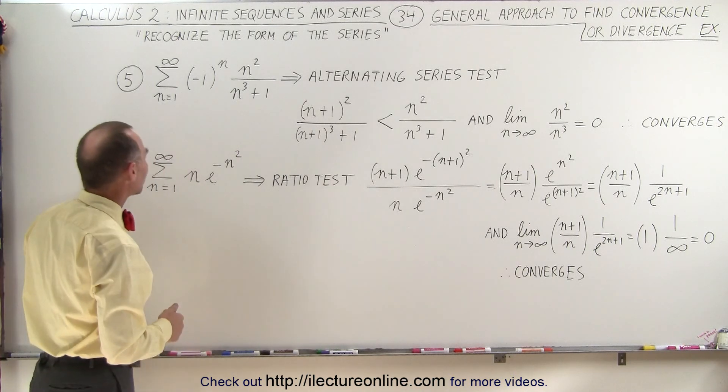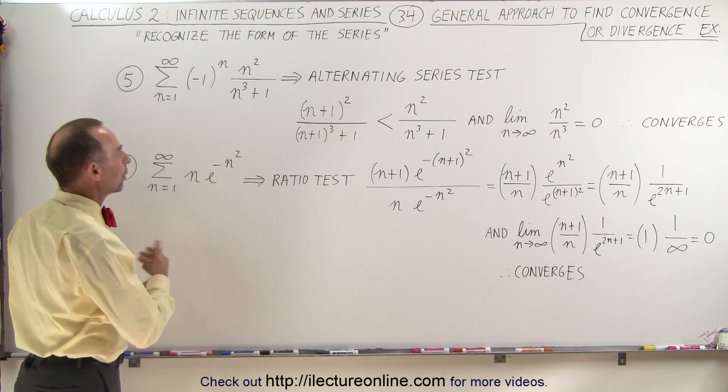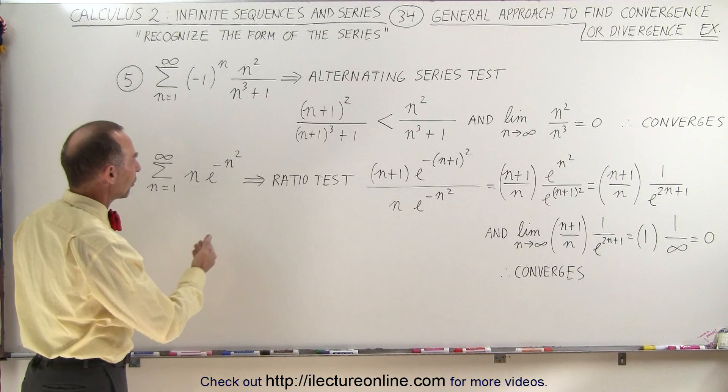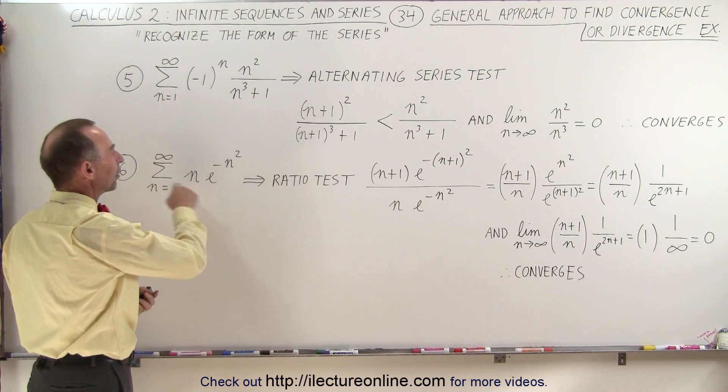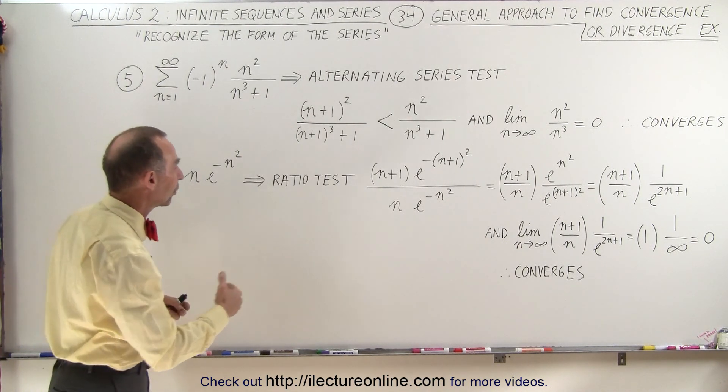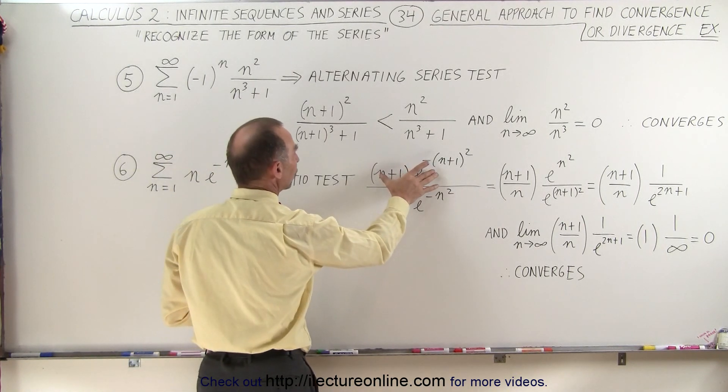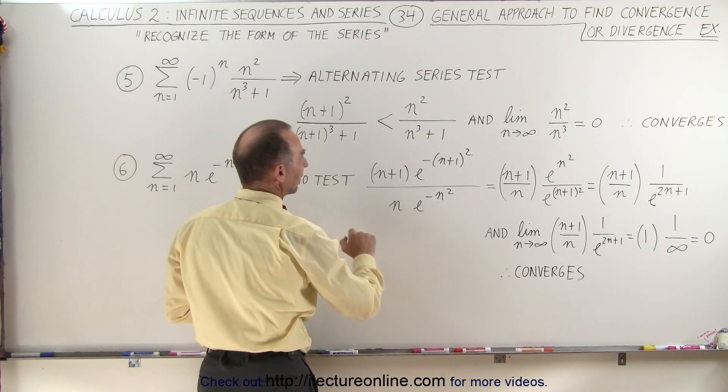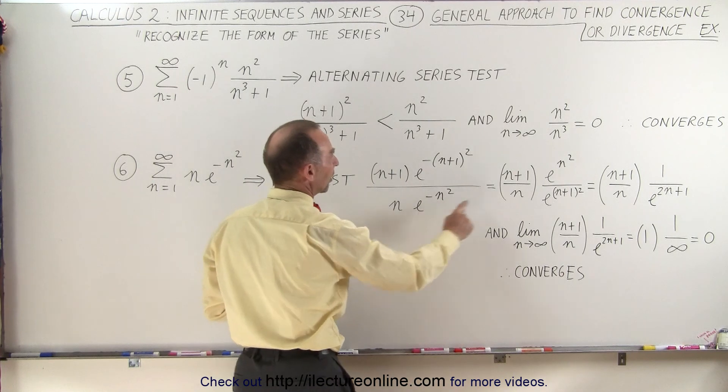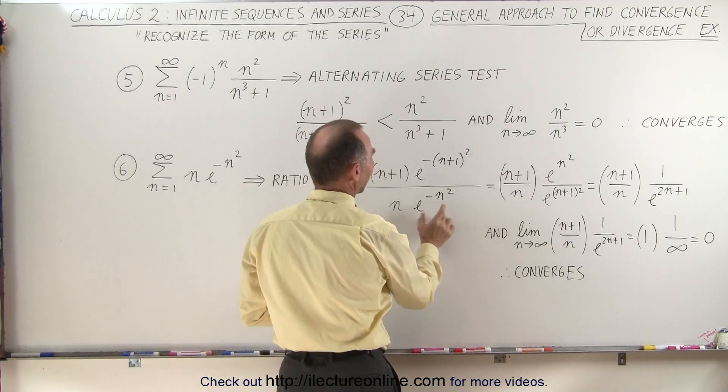Our next example, number six, we're going to use the ratio test. In other words, we're going to increase n to n plus one and then compare. So we're going to take the n plus one term divided by the n term. If we then simplify that, this becomes n plus one over n.